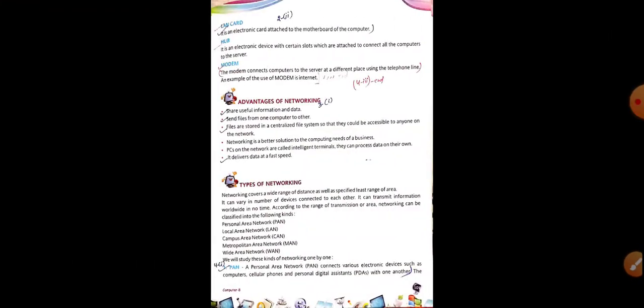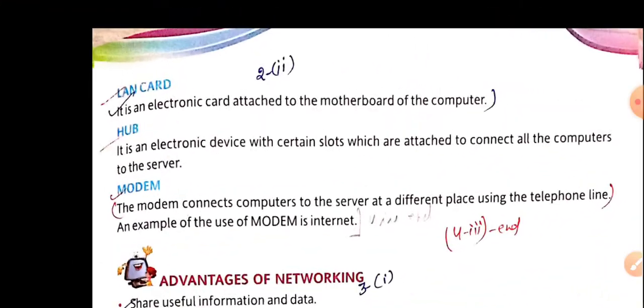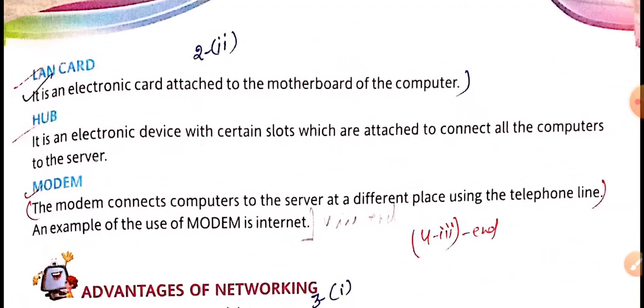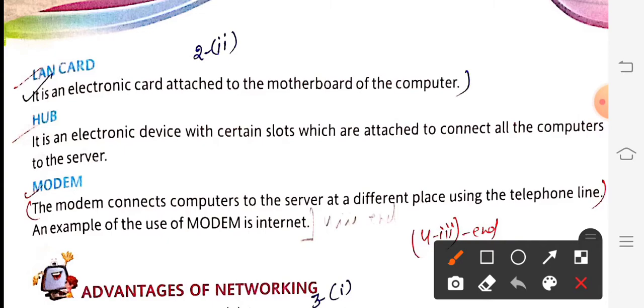Next very short answer question: give the disadvantage of ring topology from page 105. The answer is: it transmits data in one direction only.